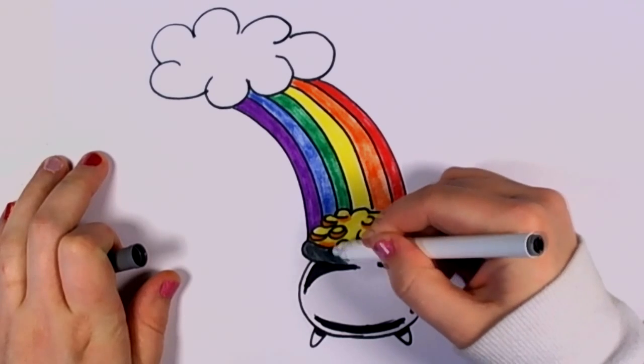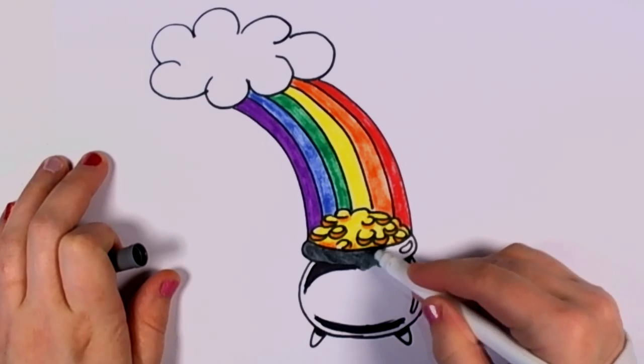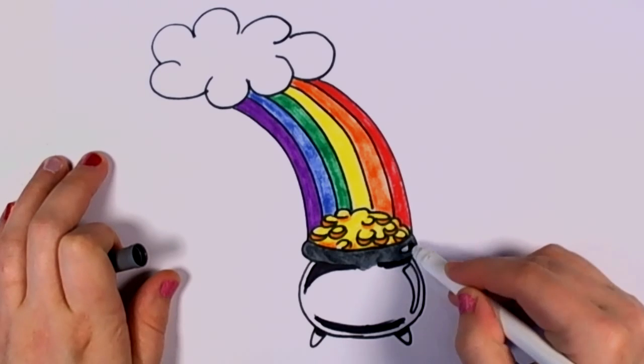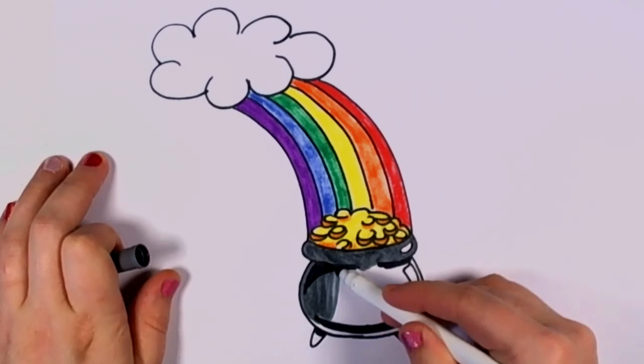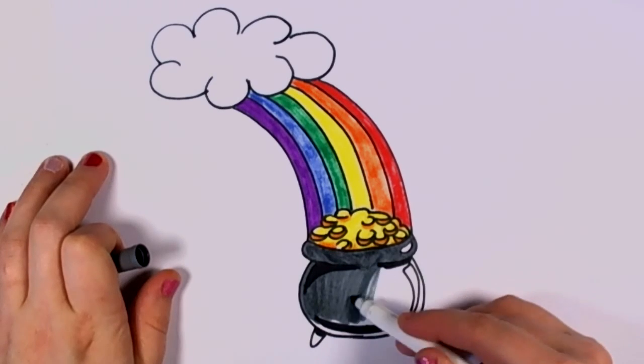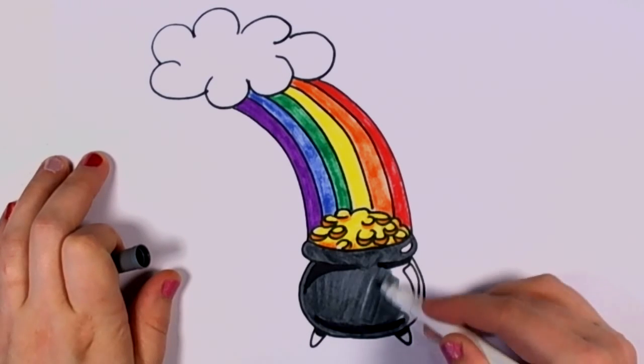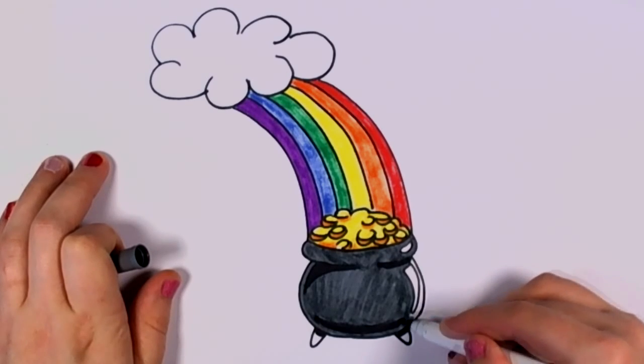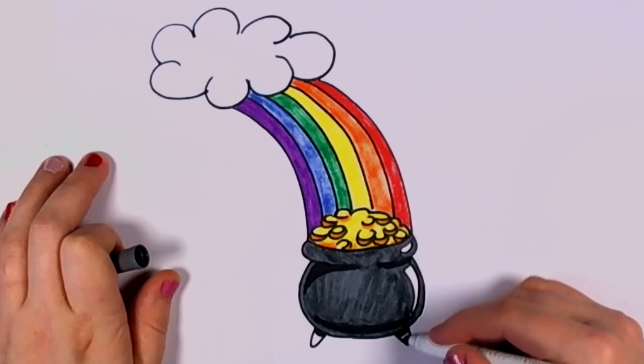I picked out a gray. I'm going to color in the rest of this pot. Color around my highlight. Yay, there's my cauldron.